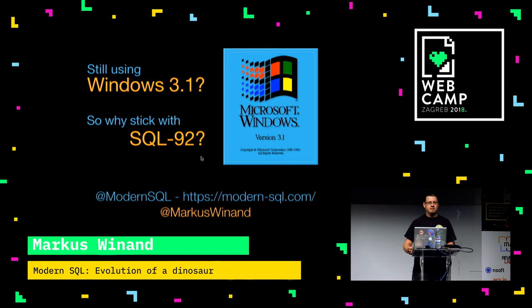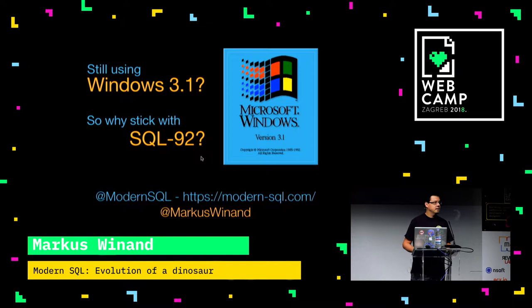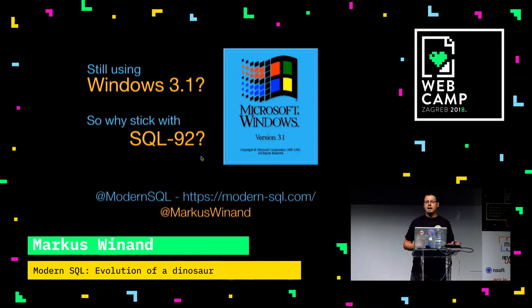Everybody knows Windows 3.1 is outdated. And as a matter of fact, SQL 92 is also outdated. It has been preceded by newer releases of the SQL standard. And the standard — I think there are quite some interesting things in there which you should know as a developer, even if you're focusing on frontend. This talk will go through all of the standards that came out after SQL 92 and picks just a few features which I would like to demo, so you get an idea what you might have missed in the past 25 years.